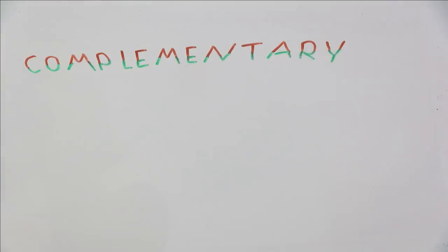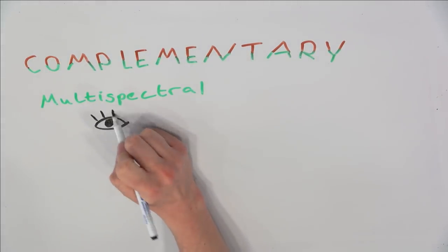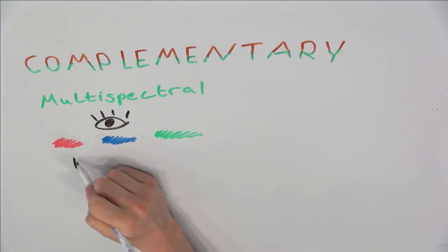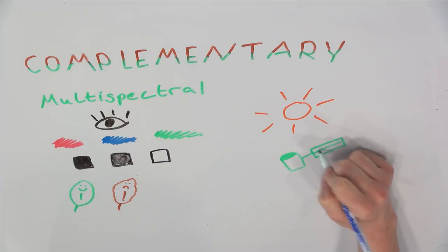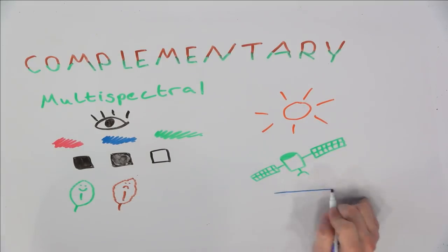As humans, we see the world similar to multispectral sensors. They can distinguish different colors and different levels of brightness. This allows them, for instance, to tell healthy from unhealthy vegetation or forest from crop plants. However, they only work when there is an external source of radiation, like the sun, and they cannot see through clouds.